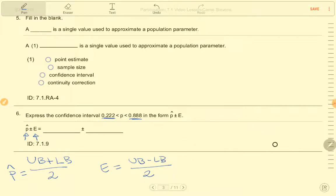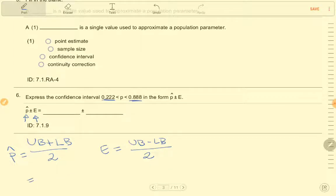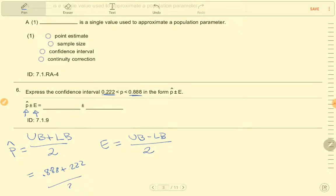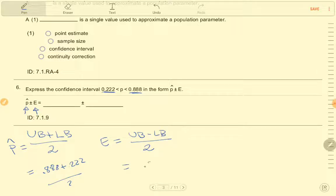So I'll plug in the values. So p hat will be found by doing 0.888 plus 0.222 divided by 2, and then E will be found by doing 0.888 minus 0.222 divided by 2. So let's do the math shall we?